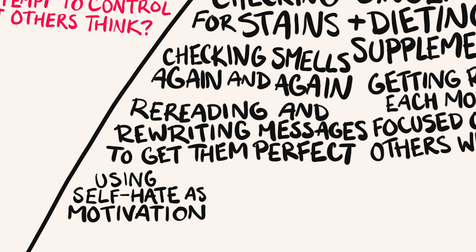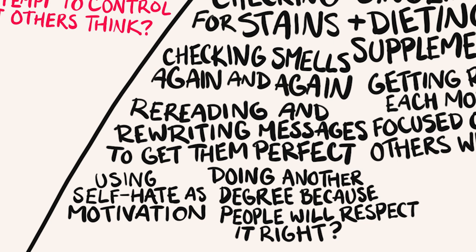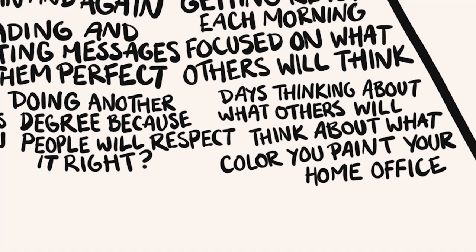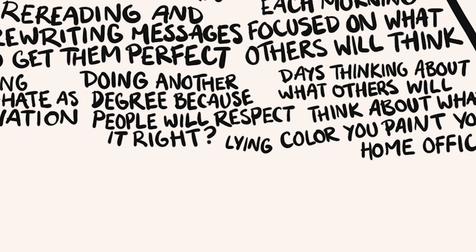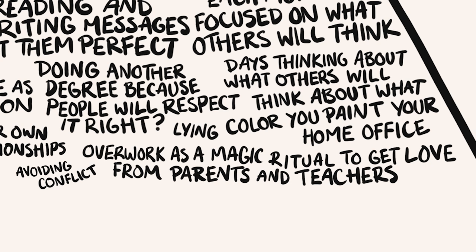Around all of this, they might be trying to use self-hate as motivation - seeing themselves as a problem to fix, hating on how they write, communicate, talk, feel, and look, somehow expecting that to support growth and control what other people think. They might spend days thinking about what color to paint their home office just because they're thinking about what other people will think about how it looks. White lies - always saying whatever they think other people want to hear, ignoring their own needs in relationships, avoiding conflict at all costs. Maybe when they were young, they learned that overwork and pushing themselves to extreme exhaustion was a way to get love and attention from others.